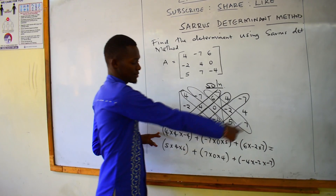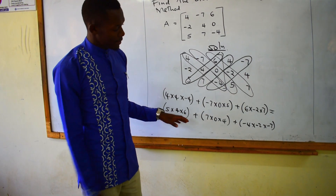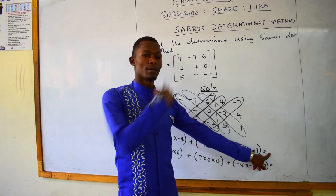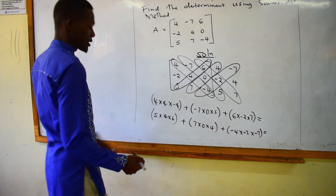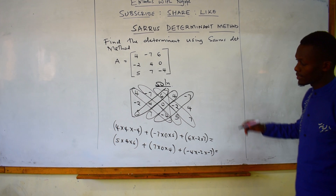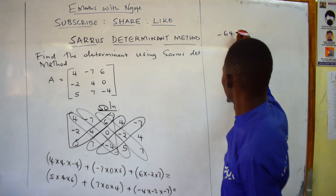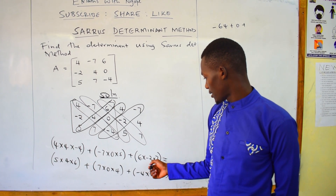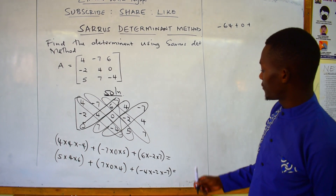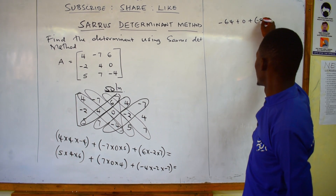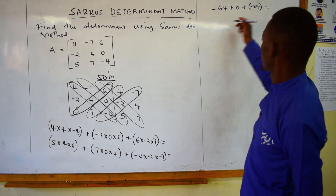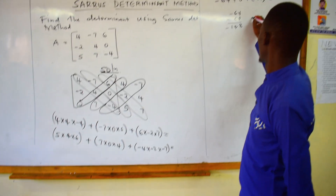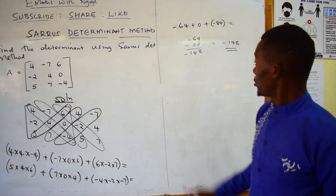You multiply the three terms of the main diagonal and add them, then multiply the three terms of the other diagonal and add them, then subtract the second from the first. So: 4 times 4 is 16, times negative 4 is negative 64. The middle term has a 0, so it becomes 0. Then 6 times negative 2 is negative 12, times 7 is negative 84. So the main diagonal sum is negative 64 plus 0 plus negative 84, giving negative 148.